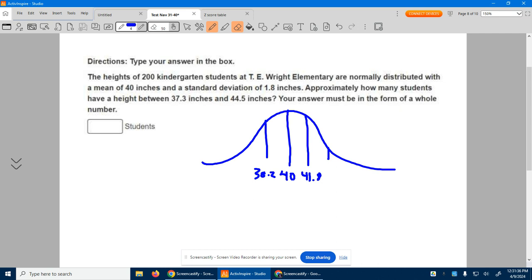But they want to know approximately how many students have a height between 37.3 and 44.5. Now 37.3 is like right here, so they want it between 37.3 and 44.5 way over here. So they want to know how many kids are in that data spot, how many out of the 200? Looks like a majority of them, but I don't know how many.